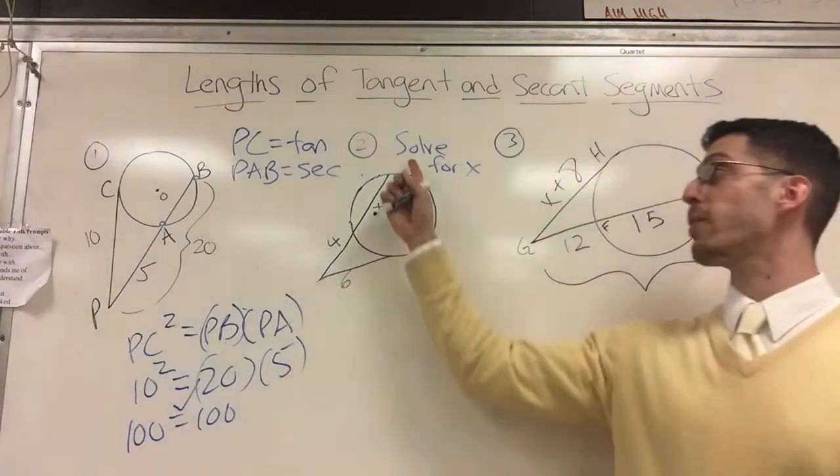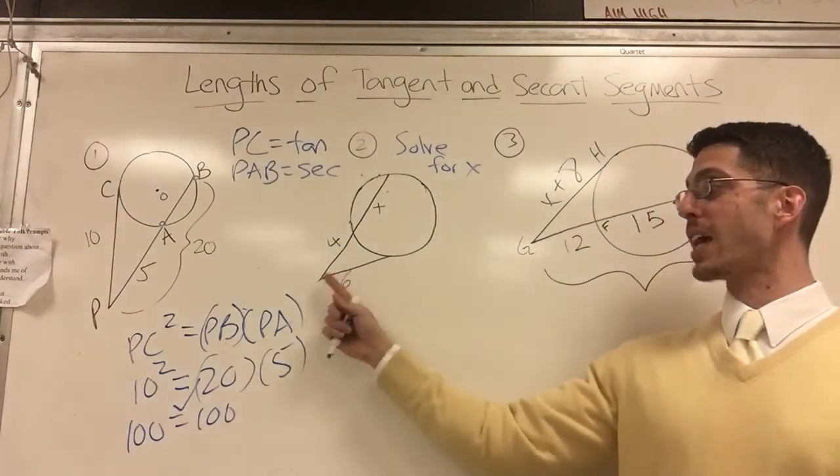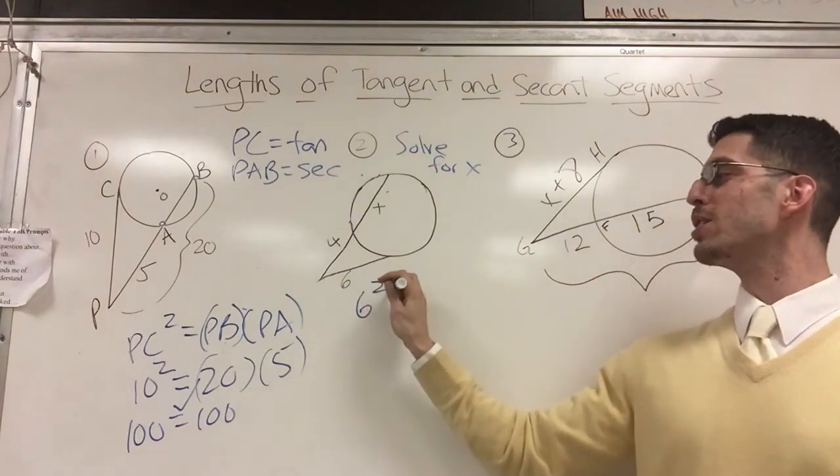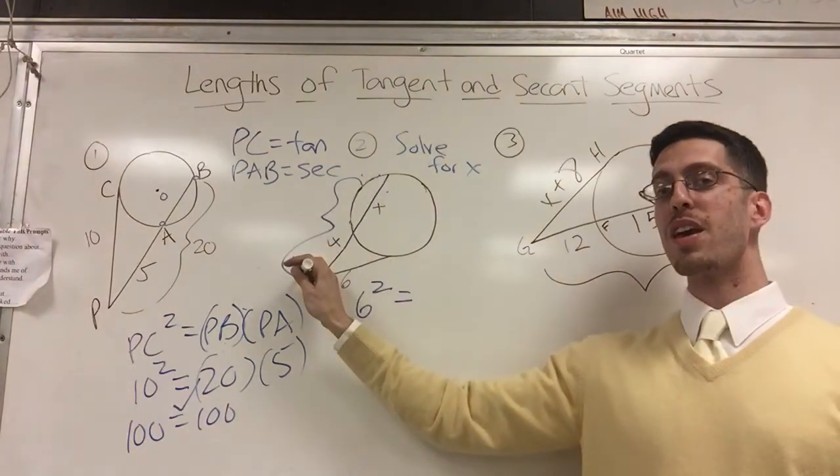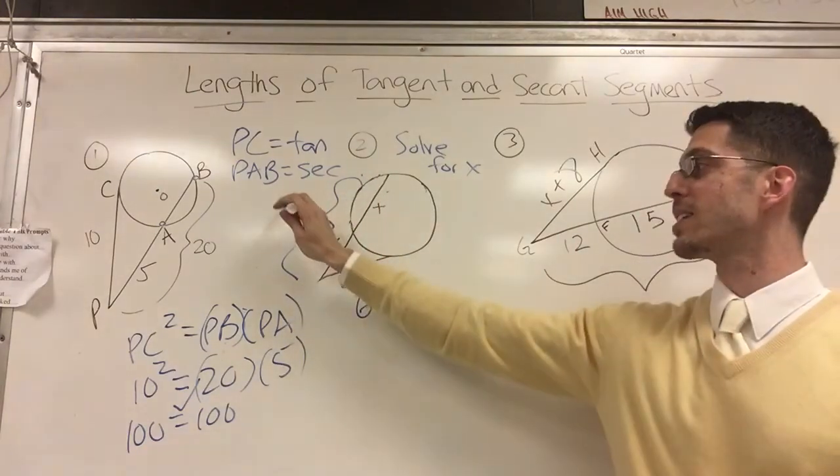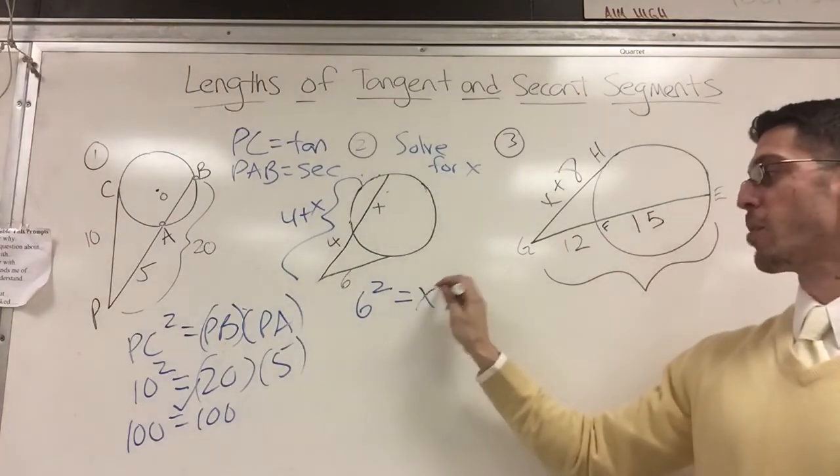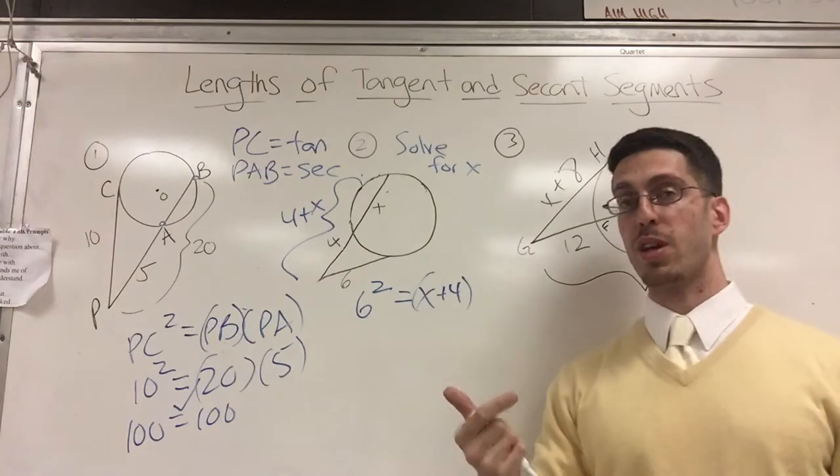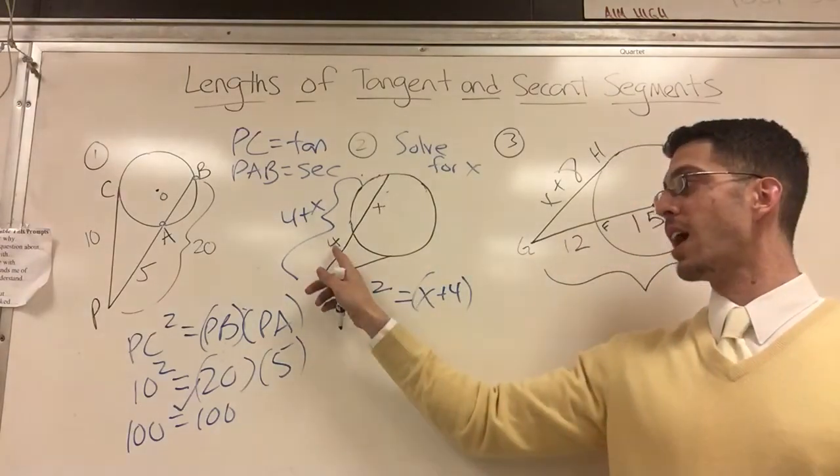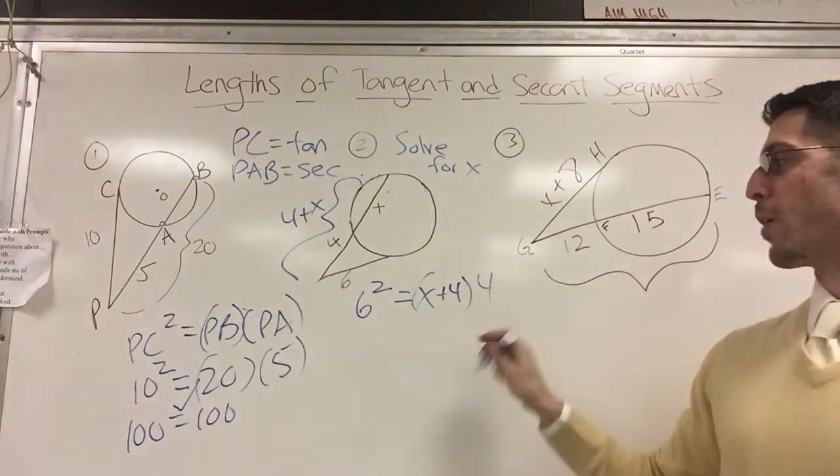Now we're going to do it when you actually have to solve. If I have to solve for x, I'm going to be careful because I've made mistakes in the past. Let me see here. Tangent is 6, so 6 squared equals - the entire thing, is it 4? No. Is it x? No, it's 4 plus x. The entire thing is 4 plus x, also known as x plus 4. I prefer my x to go first.